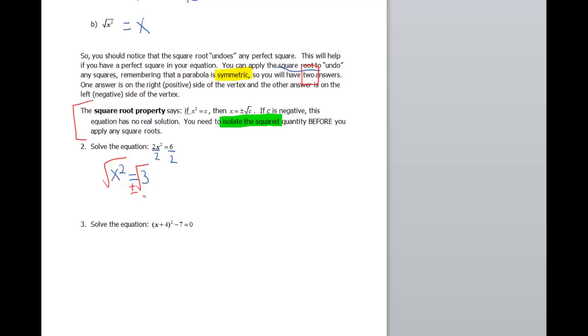In this case, our vertex is at 0, so this makes perfect sense. So that means x is going to equal plus or minus the square root of 3. Lovely answer.